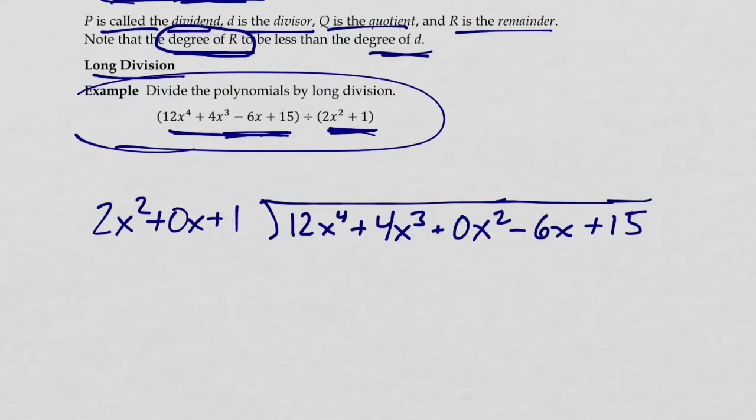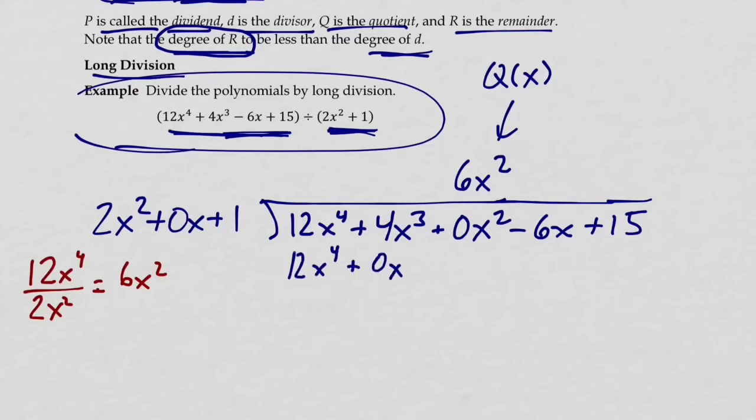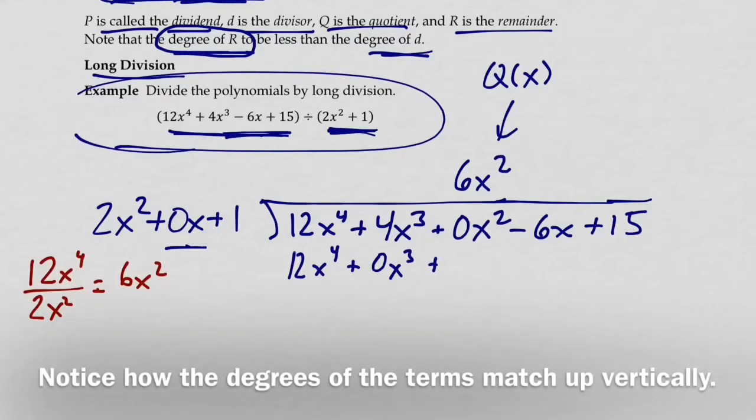And now here's the general process. I want to take the leading coefficient of the divisor and divide the leading coefficient of the dividend by that. So we can make a note of this off to the side. I'm going to take 12x⁴ and divide that by 2x². The result is 6x². So 6x² becomes part of the final answer. And this is going to be the quotient. We're sort of building the terms of Q(x) up here above the division bracket.